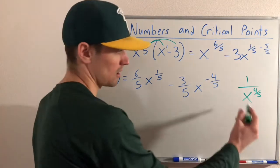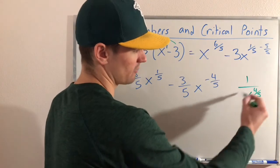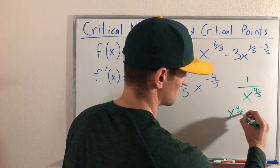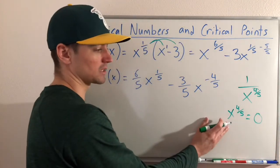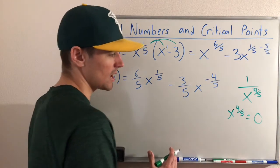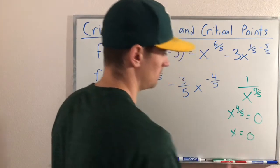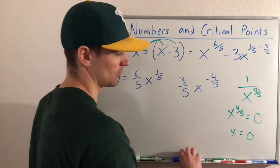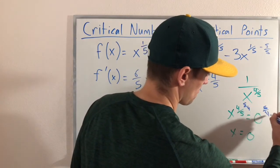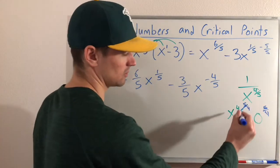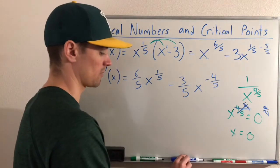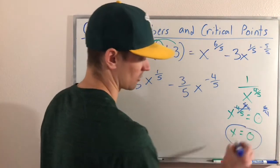We would be dividing by zero whenever x to the 4/5 equals zero. Raising both sides to the 5/4 power causes the powers to cancel, and zero to the 5/4 is still zero, so we get x equals 0. This means x equals 0 is one of our critical numbers, since f prime of x is not defined there.